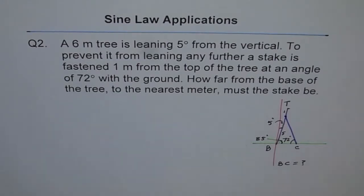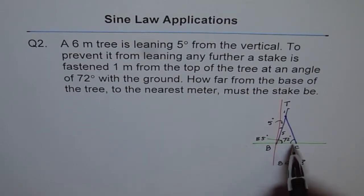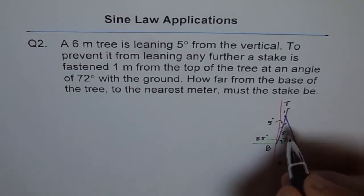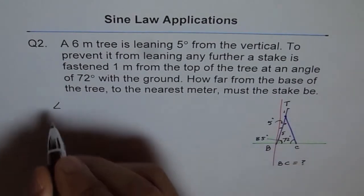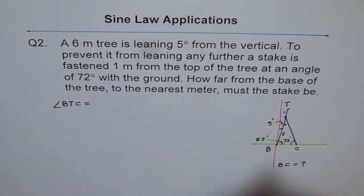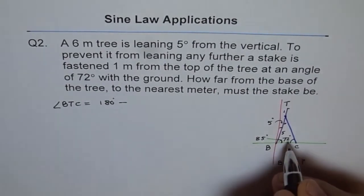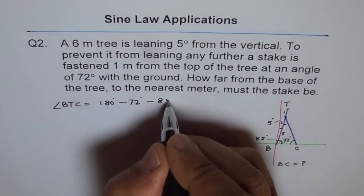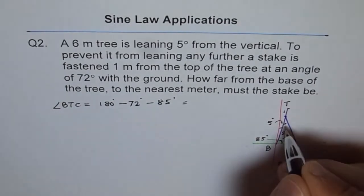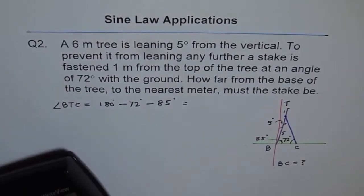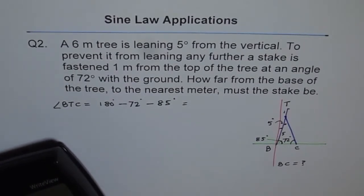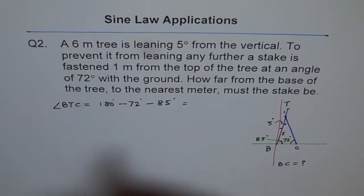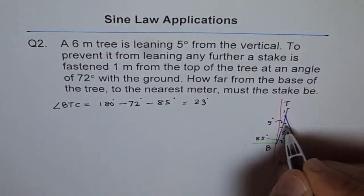Now that we have two angles of the triangle, we can find the third. Angle BTC equals 180 minus 72 minus 85. Using a calculator: 180 − 72 − 85 = 23 degrees. So the angle at the top of the triangle, angle BTC, is 23 degrees.